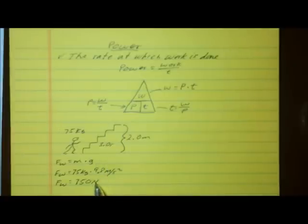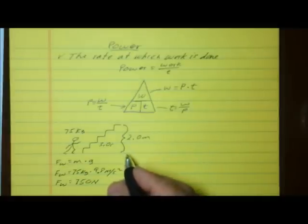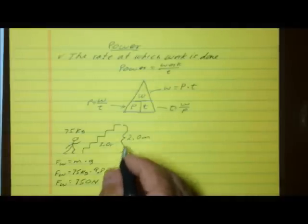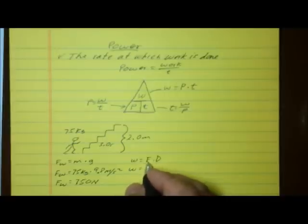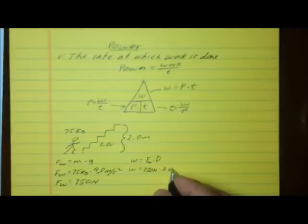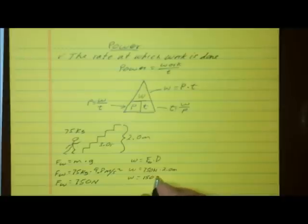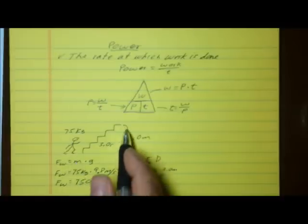We're moving this force through a distance to do work in a time of 3.0 seconds. Work equals force times distance. The force of weight is 750 newtons, times the distance of 2 meters. So the work done climbing the stairs is 2 times 750, which equals 1500 newton meters. Since a newton meter is a joule, that's 1500 joules of work done lifting your weight vertically 2 meters.